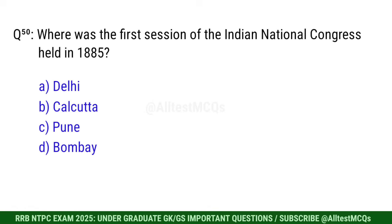Q50. Where was the first session of the Indian National Congress held in 1885? Right option is D. Bombay.